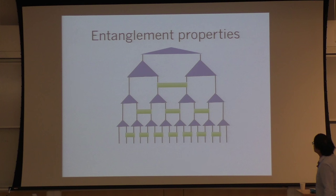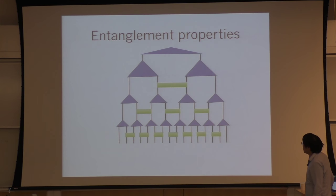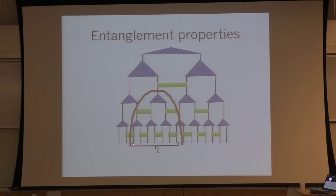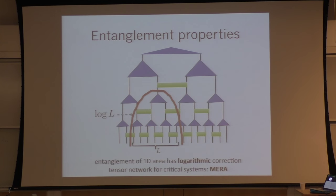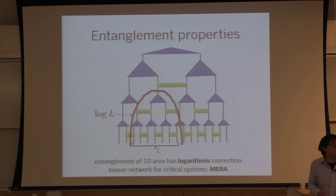Let's look at MERA's entanglement properties. If I consider a region of L sites and ask how many bonds I cut to separate the inner from the outer region, I cut order log L bonds. So I've written down a tensor network which, for a one-dimensional system, captures not just a constant amount of entanglement but a logarithmic entanglement. This is what's necessary to describe a critical or gapless state — this is one reason why we think of MERA as a good ansatz for gapless systems.